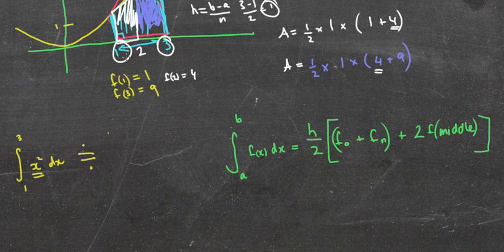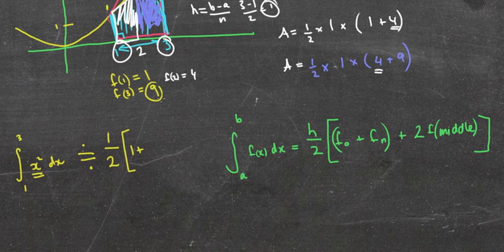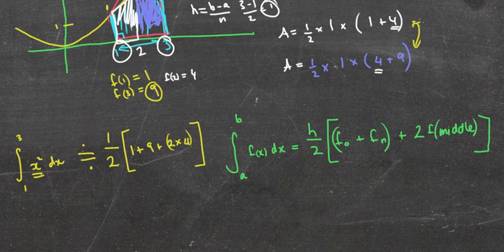So h over 2, actually I'll do the general rule first. h over 2 times function of the first plus function of the last. I'll put f0 and fn there, 0 meaning it's the very original, fn is the last one where n is the last, plus 2 times the functions of the middle values. Now it might sound confusing, but let's have a look at applying to this question we just did. Well we knew the h was 1 for these 2 function values. So 1 over 2 times the first function we know was 1 because that's 1 high, plus the last one which was 3 squared which was that 9 there, plus 2 times the middle function which is 2 squared which is 4. And that's exactly what I've got here.